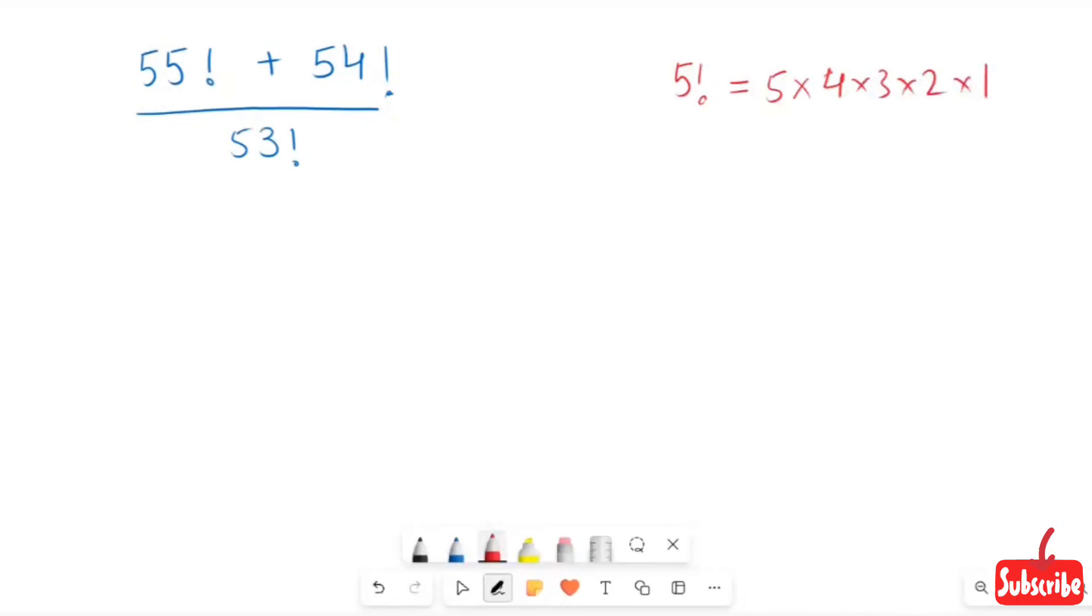I'm going to write the factorial of 5 in this form also, because this is the factorial of 4. But I can write this factorial of 5 in this form also. I can add that with this thing because this is the factorial of 3.